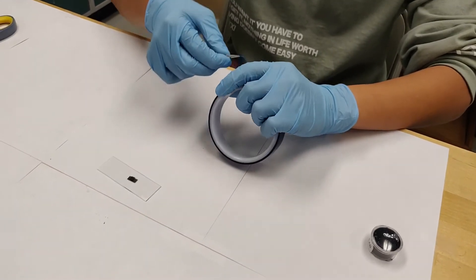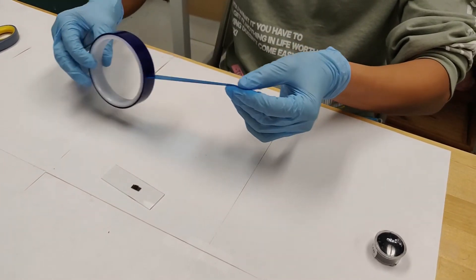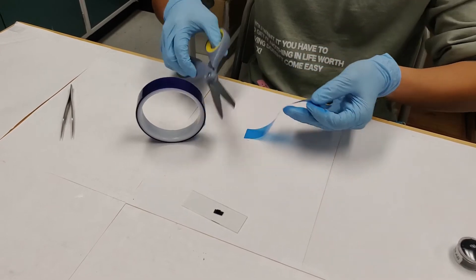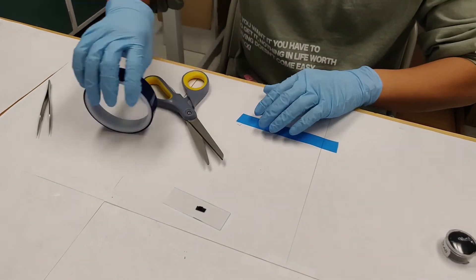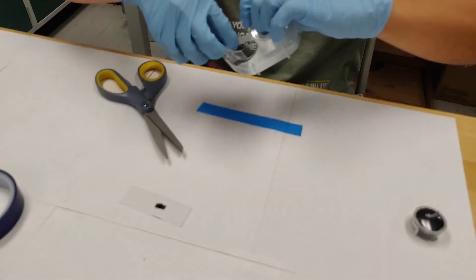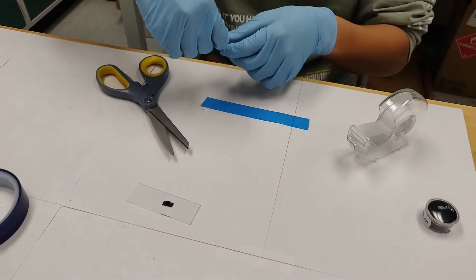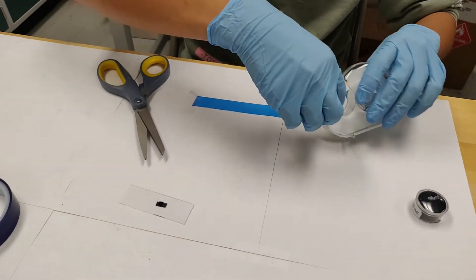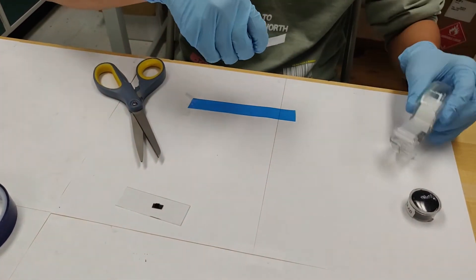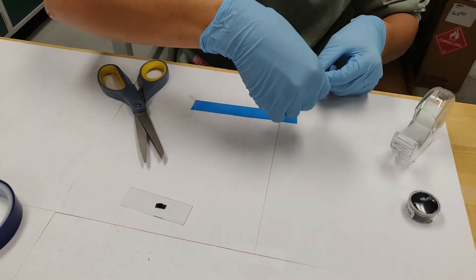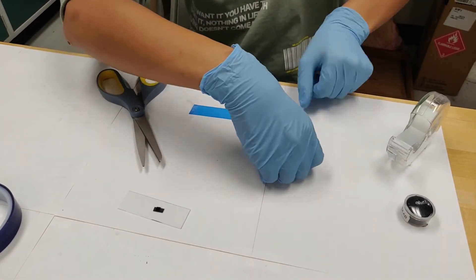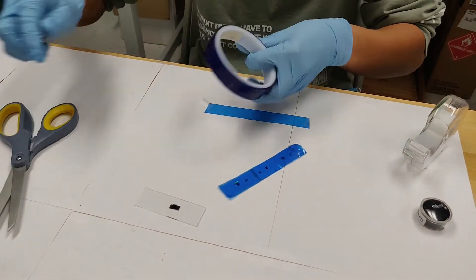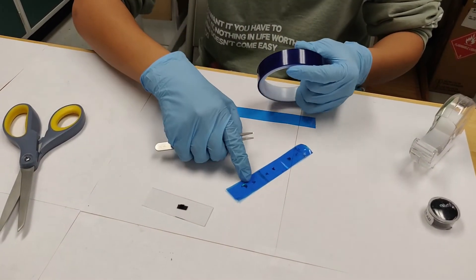Then what you do is cut another piece of tape and tape this one down. Then you cut one more piece of tape that you will use to take off this piece of bulk.